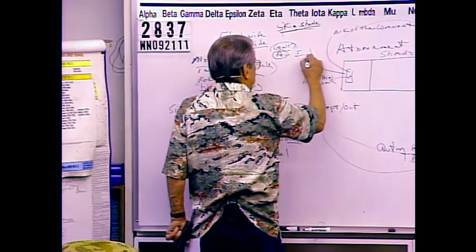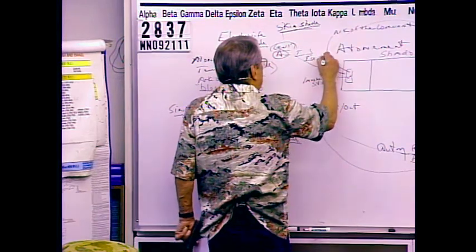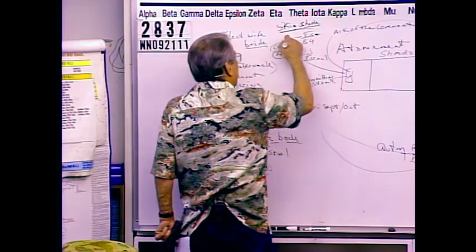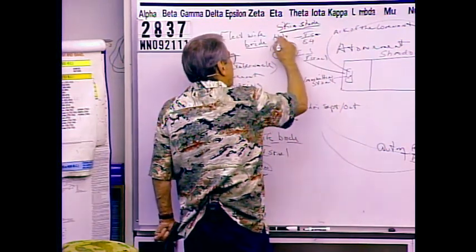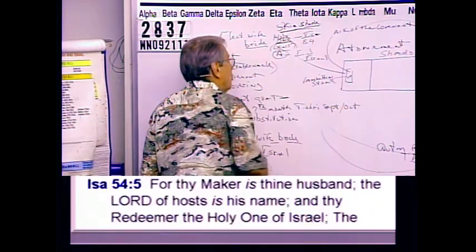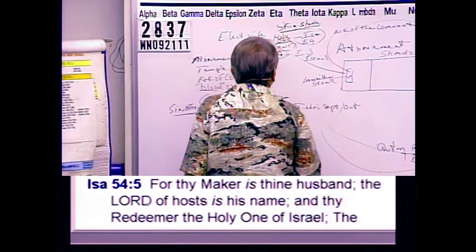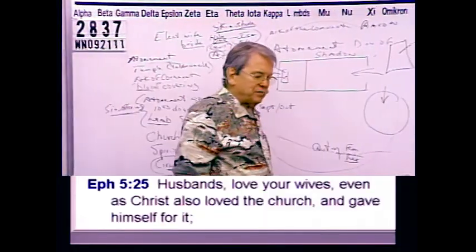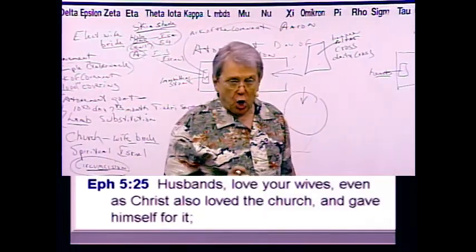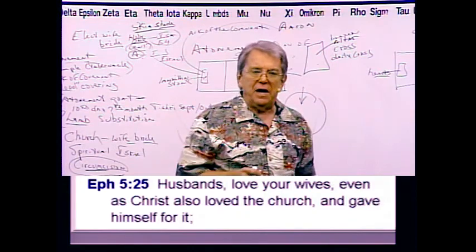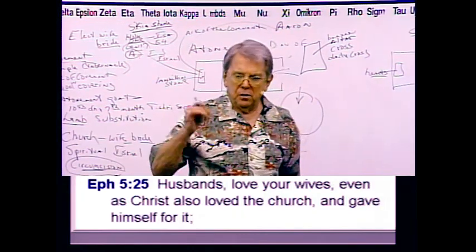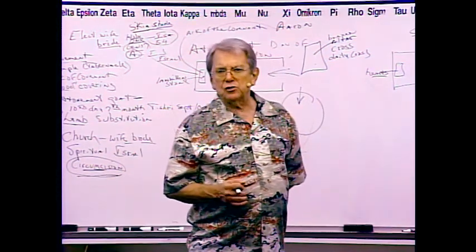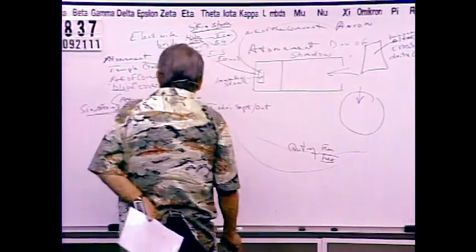He's the God of the whole earth and the Redeemer, according to Isaiah 54. You have to teach on the Holy One and on Israel. 'Husbands, love your wives as Christ loved the church and gave himself for her' — he didn't die for anybody except his wife, the church. If he died for his wife the church and nobody else, you have to believe in what's called limited atonement.